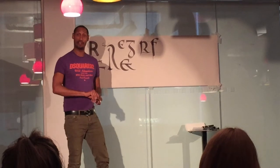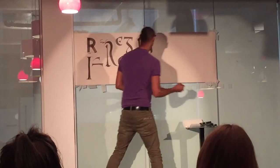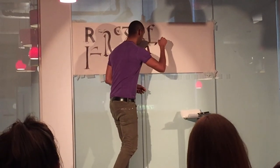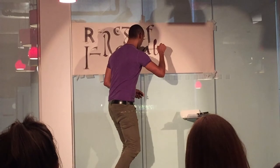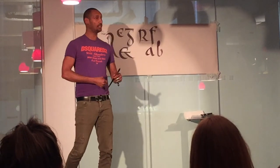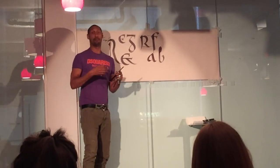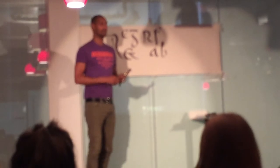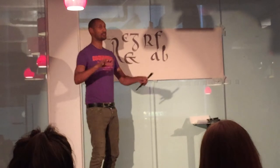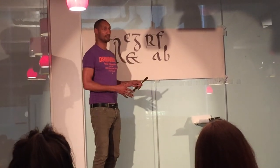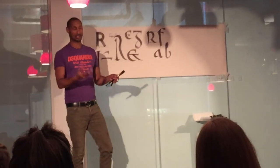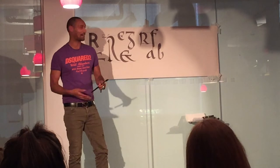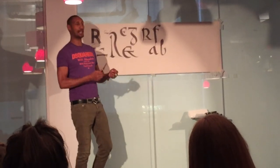Jump ahead a couple of hundred years and we see the development of another script called Carolingian. Carolingian is quite an interesting script because it starts to get a little bit more playful. It was actually developed because when Charlemagne came to power, he received lots of tributes — lots of absolutely stunning Bibles — but everywhere wrote a different script. So he decided to commission a unified script, and that's why we have Caroline Minuscule, also known as Carolingian. Of course, when Charlemagne dies, we see a French Caroline, an English Caroline, a German Caroline — and the establishment of national identity in script.